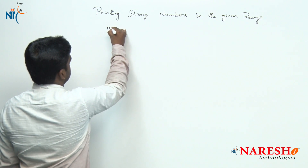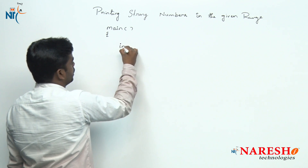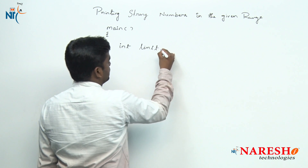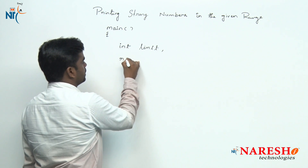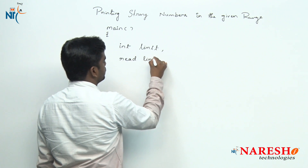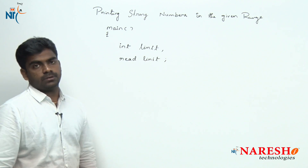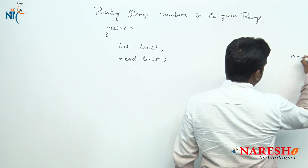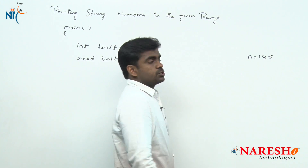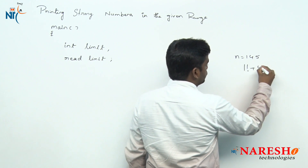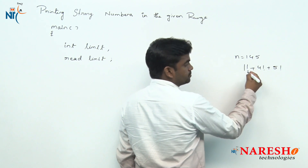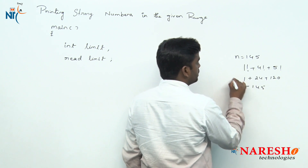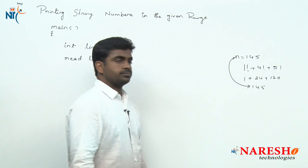Execution starts from the main function. Here, we are not reading only one number — we are reading the limit, checking how many strong numbers are there within the limit. A strong number means the sum of the factorials of its individual digits equals the number itself. For example, N value is 145: 1! + 4! + 5! = 1 + 24 + 120 = 145, so it is a strong number.